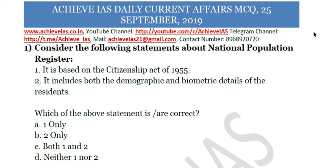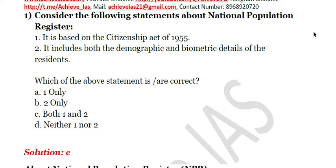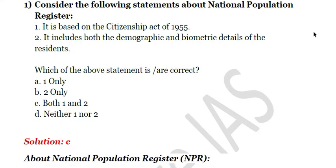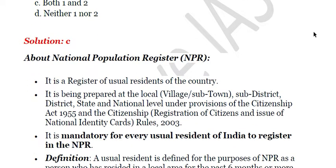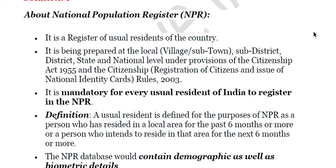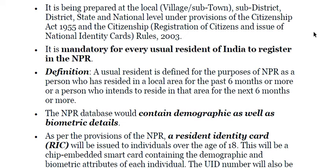The first question: consider the following statements about the National Population Register. First, it is based on the Citizenship Act of 1955. Second, it includes both the demographic and biometric details of residents. Which of the above statements is correct? Both statements are correct — the answer is C. The NPR is maintained under the Citizenship Act and includes both demographic and biometric details.